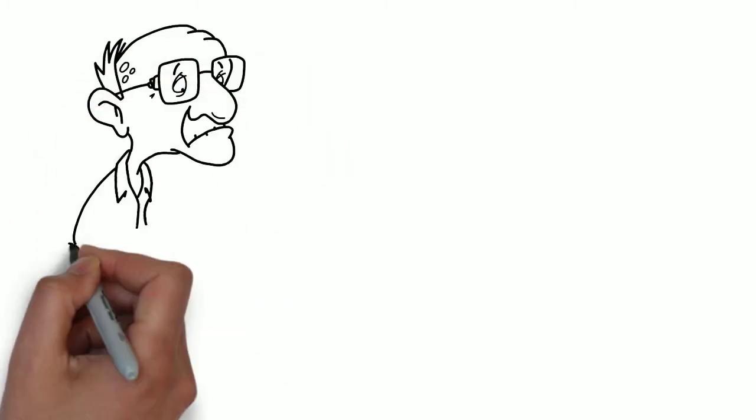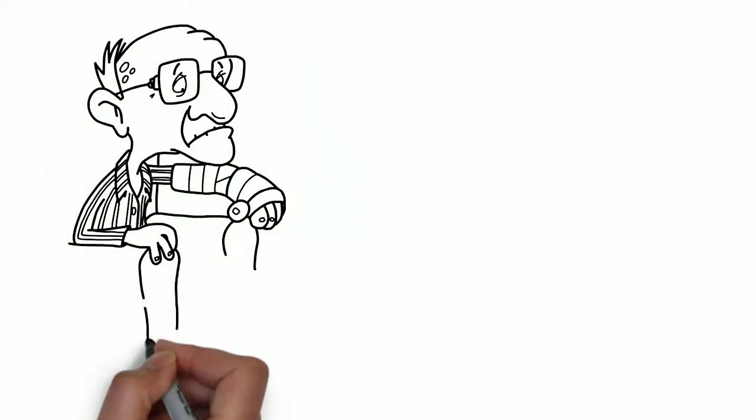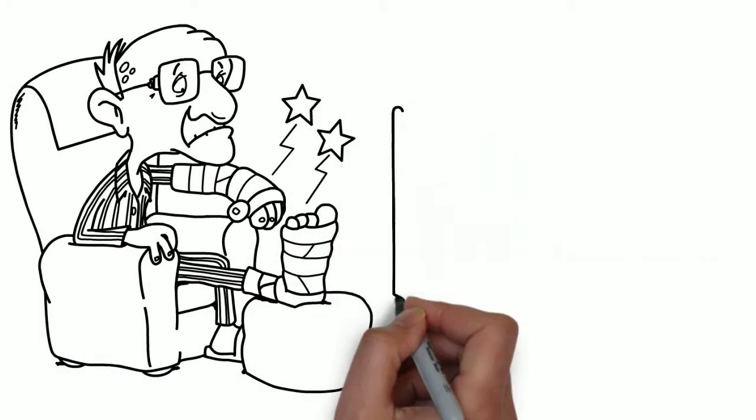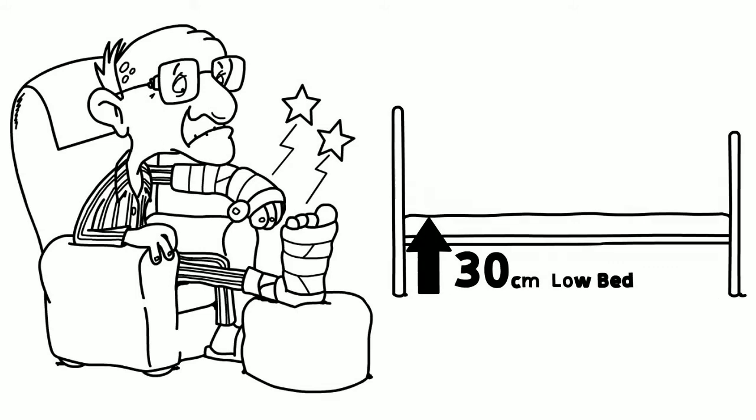The height of a nursing bed combined with a mattress can be up to 50 cm from the floor. A fragile person falling from that height carries a high risk of skin lacerations, fractures or even hospitalization.